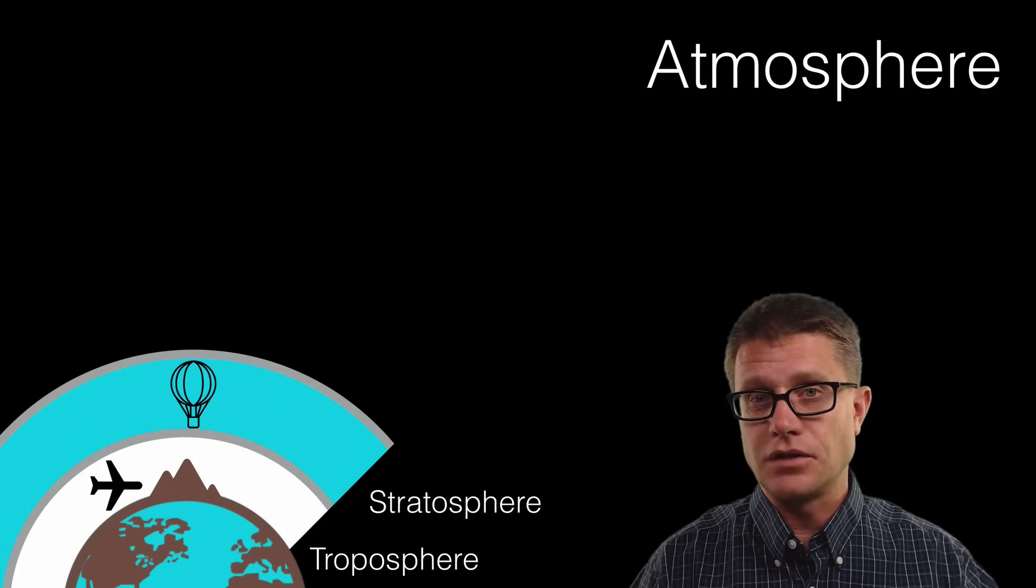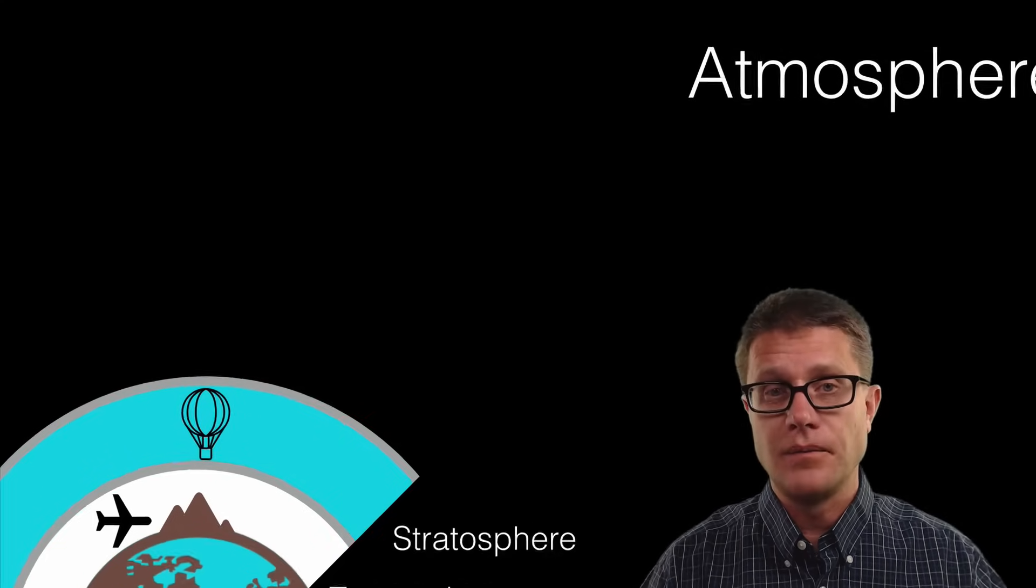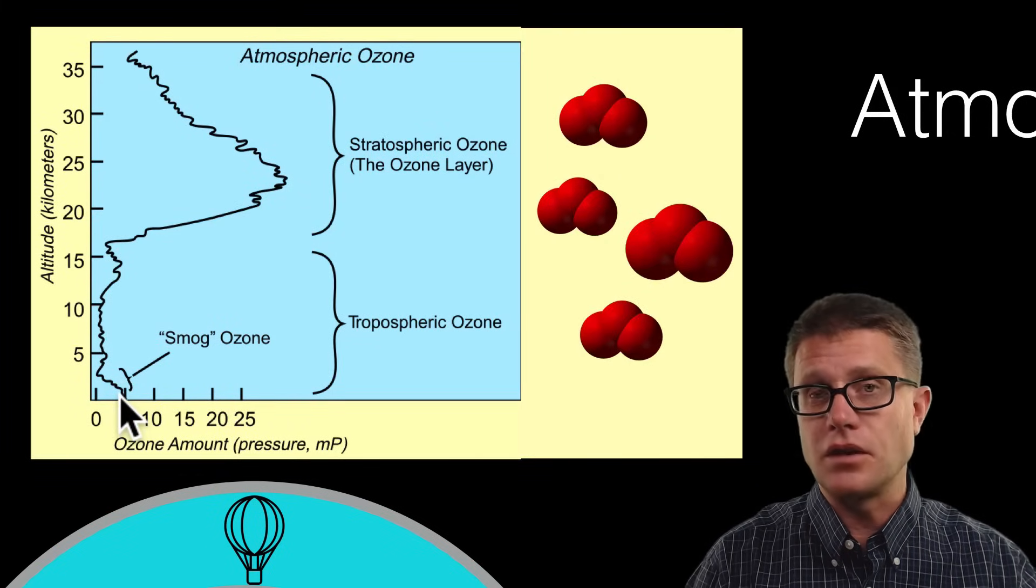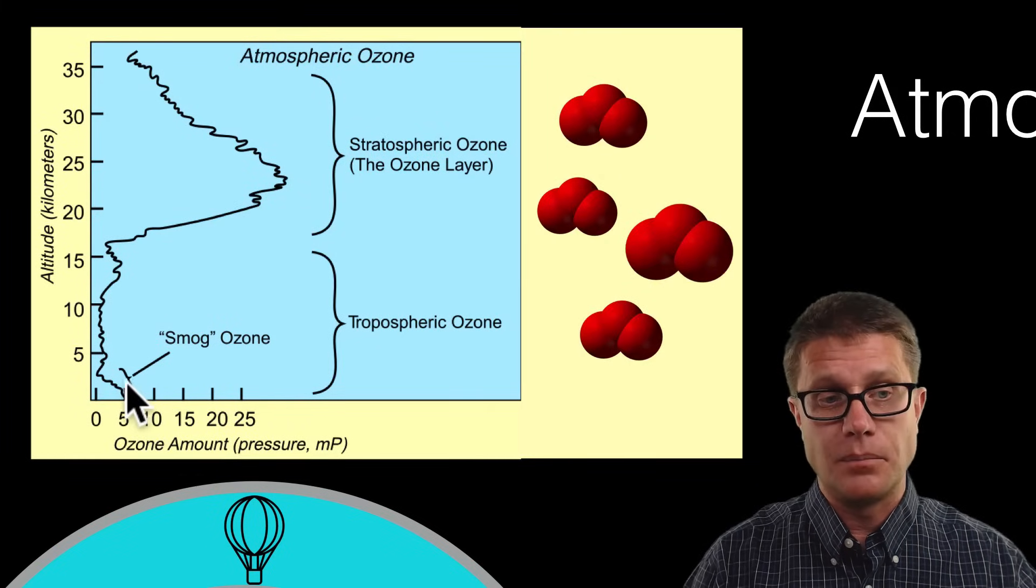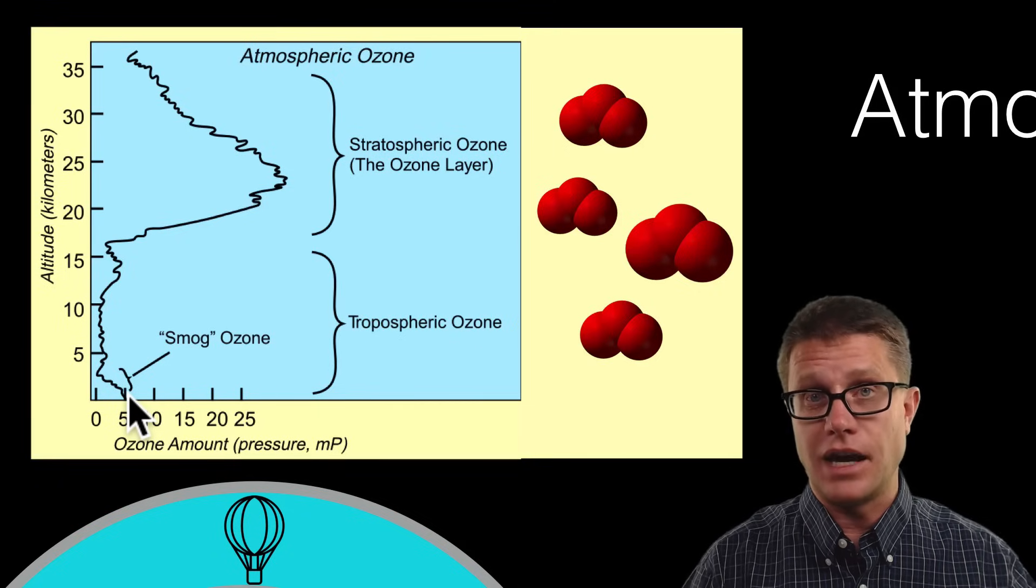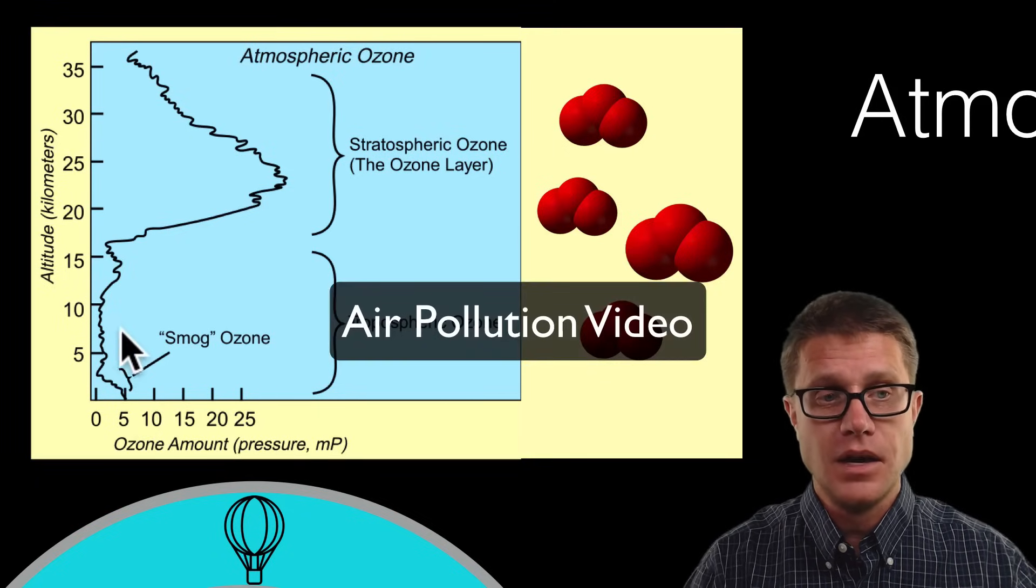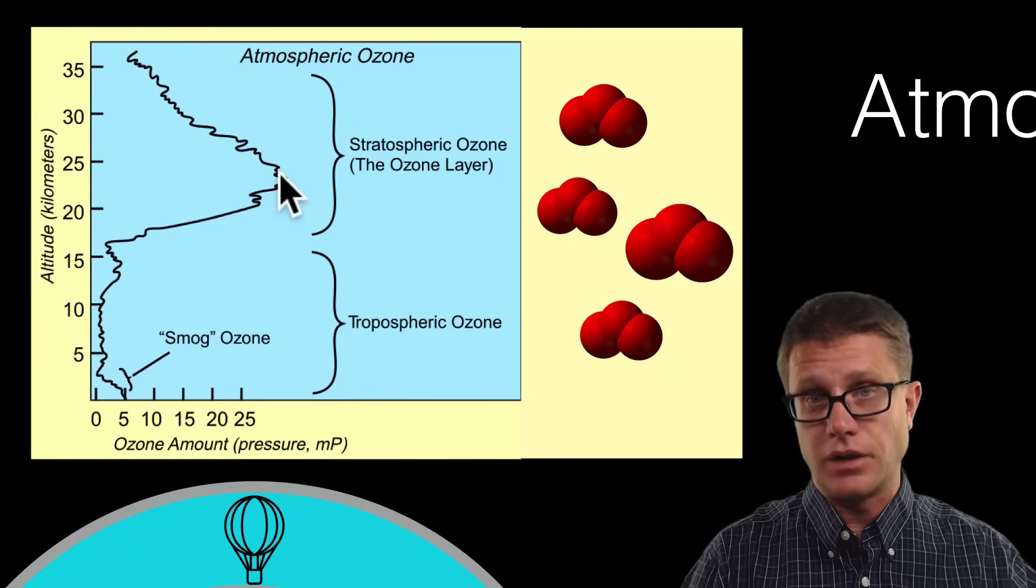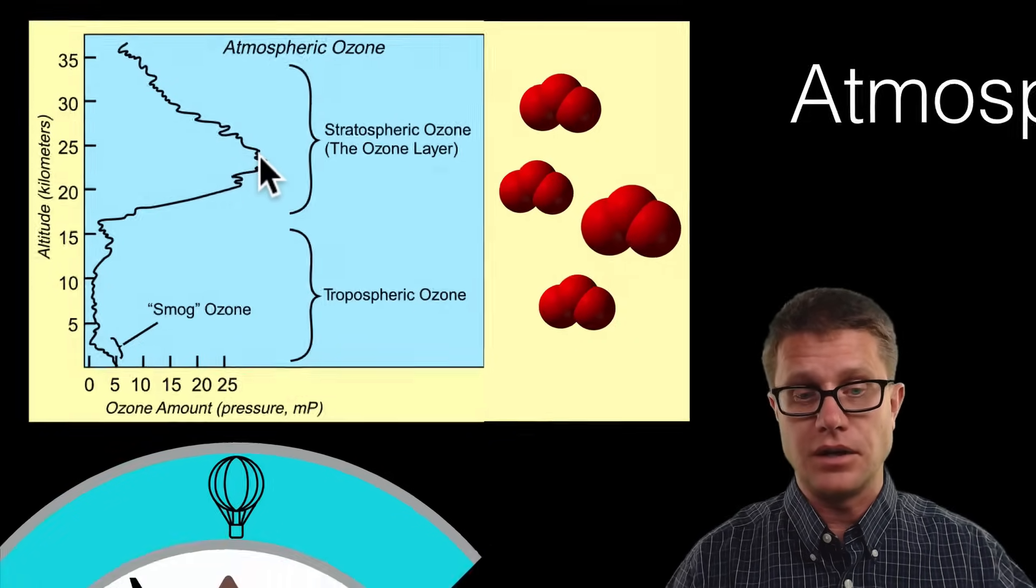Above that we have the stratosphere. Weather balloons will move into that area. If we look at ozone right here at the surface of the planet, we are going to have some bad ozone. We call that tropospheric or smog ozone. That can be damaging to us. But as we move up in the troposphere into the stratosphere we have a huge increase in that ozone layer. That is that protective layer around us.